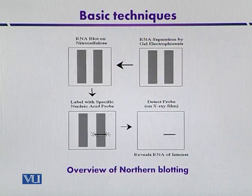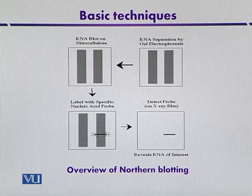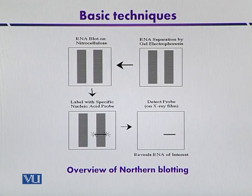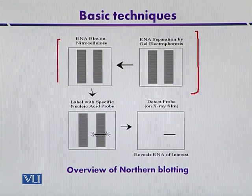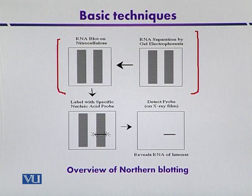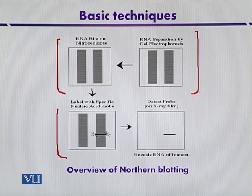This diagram shows an overview of Northern blotting. The process is more or less similar to Southern blotting used for DNA analysis. The RNA samples or fragments are first separated by gel electrophoresis, then transferred to a nitrocellulose membrane. After blotting, the membrane is placed in a solution of radiolabeled isotope, and finally placed in contact with X-ray film where hybridization is detected by autoradiography.